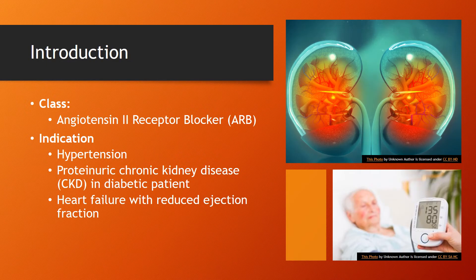Losartan belongs to the class of angiotensin 2 receptor blockers, also known as ARBs. These drugs can be used alone or in combination with other medications to treat and manage hypertension. Losartan is also indicated for proteinuric chronic kidney disease in diabetic patients, as well as patients with heart failure with reduced ejection fraction.